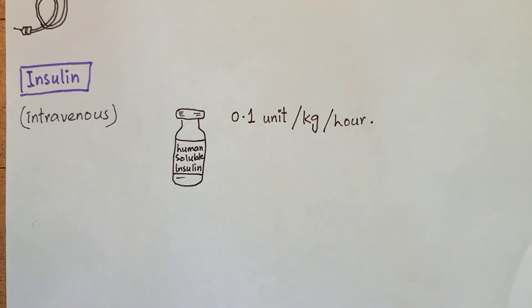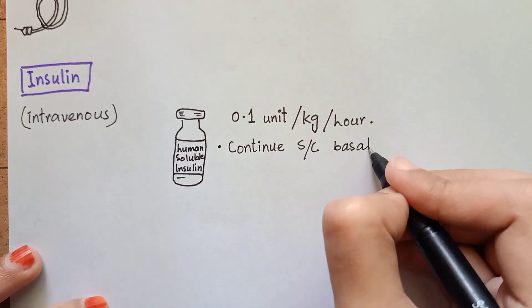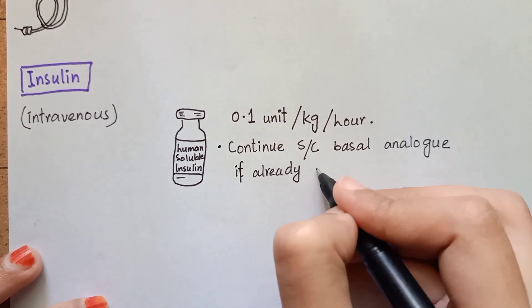Then comes the emergency management. You will commence insulin treatment as already mentioned, that is 0.1 unit per kilogram per hour, and you will continue subcutaneous basal insulin if already usually taken by the patient.